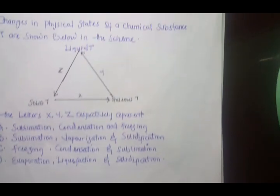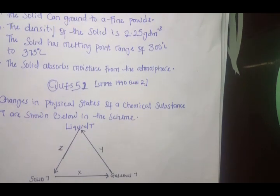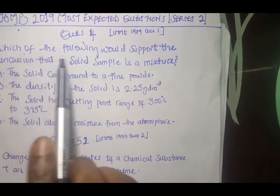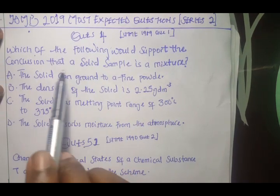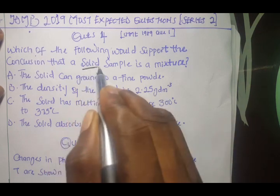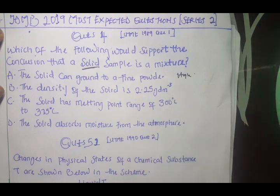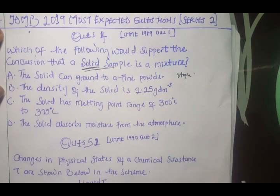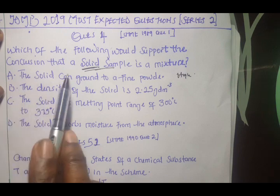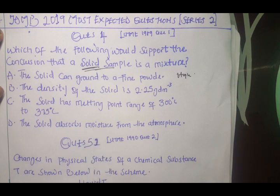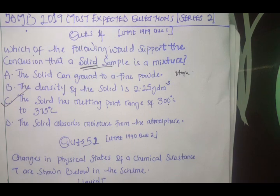For question 4 to question 10, I think we have elementary chemistry which we can do in 30 seconds. Now question 4, 1989 question 1: which of the following would support the conclusion that the solid sample is a mixture? Now solids have definite melting and boiling point, very important. So all what you need to know about these solid samples is they always have definite melting and boiling point. When you go there, the first one: solid can be ground to powder, no. The density of solid is 2.25, no.